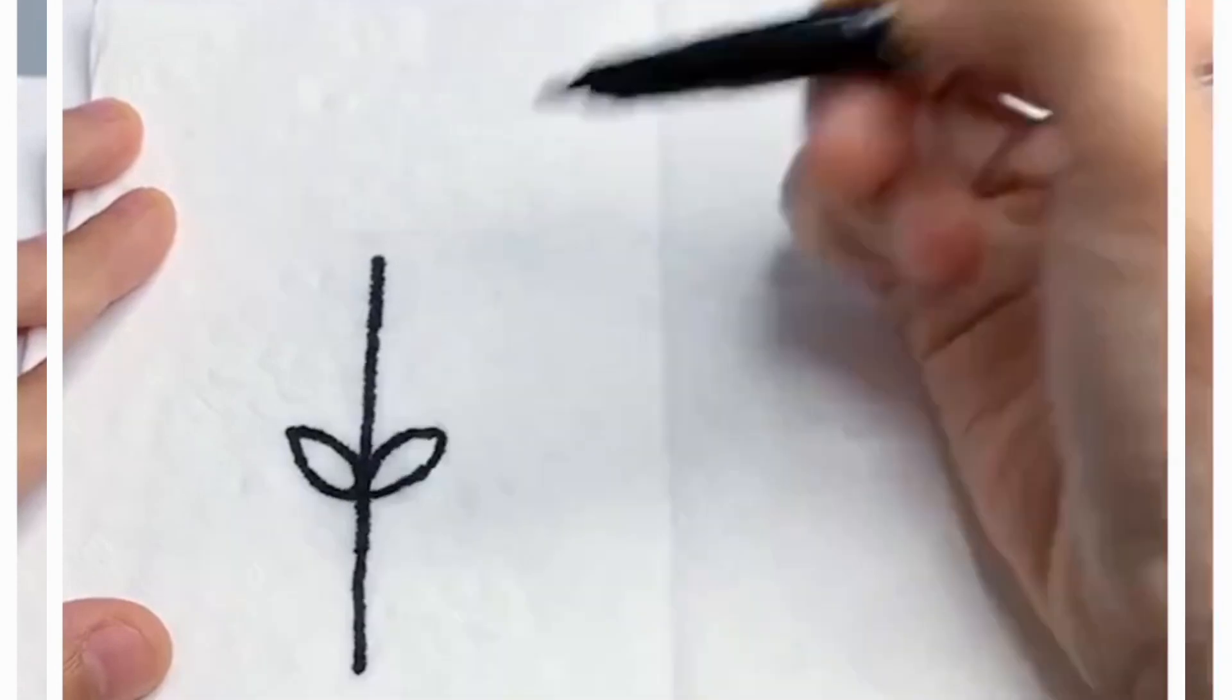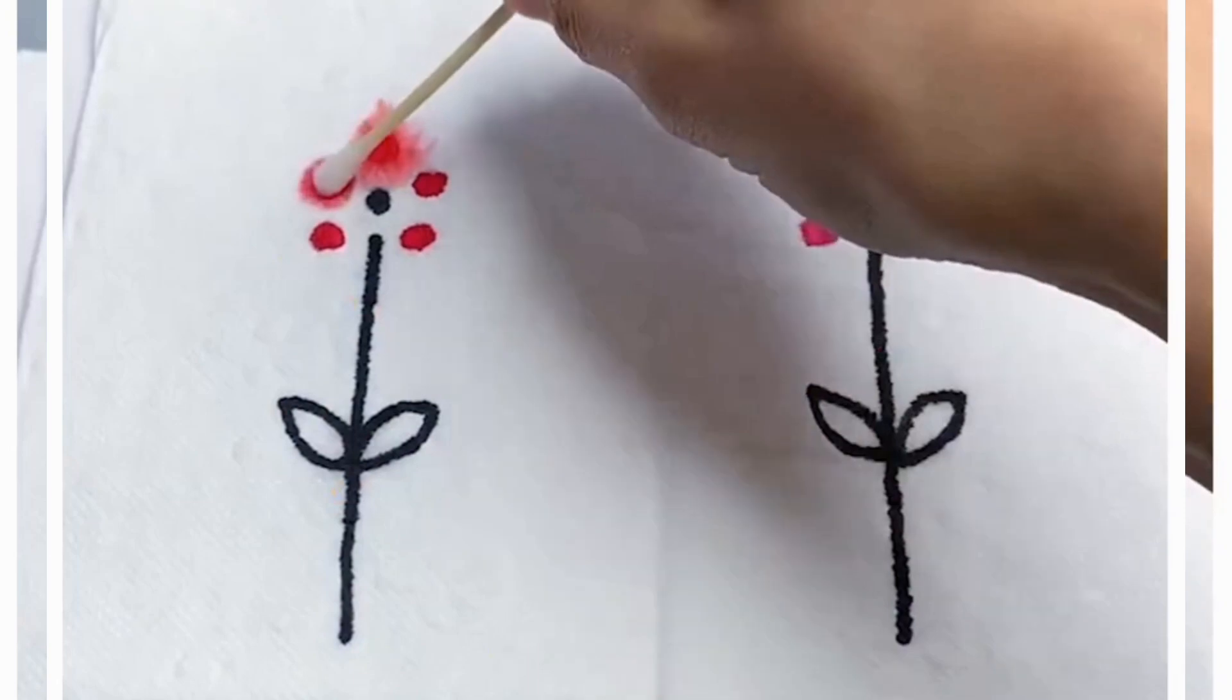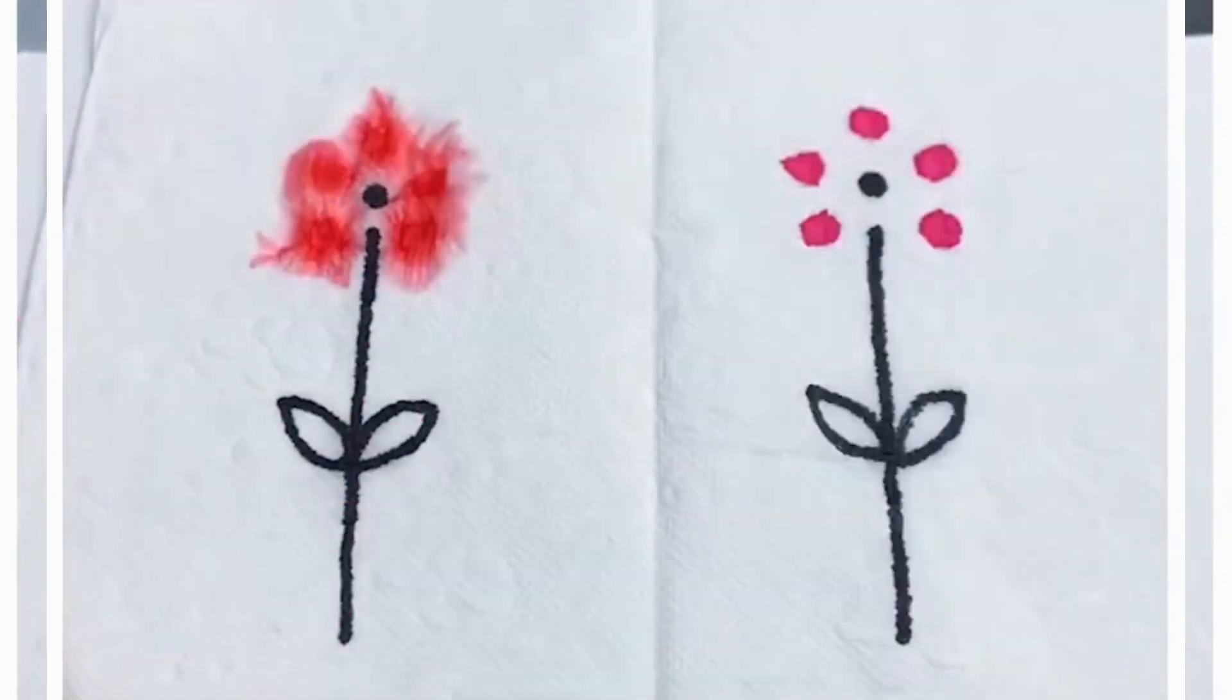Take this tissue paper and we're going to use sketch pen. After making these dots, take this dropper and put the water on the top of it. Look how pretty this is looking.